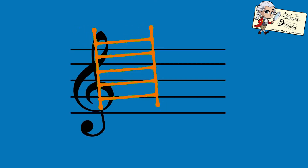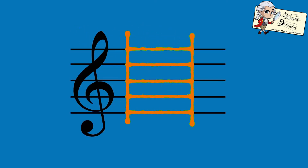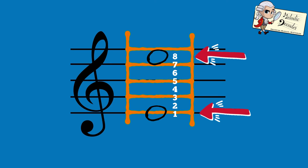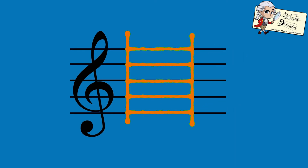Remember our ladder? To work out the interval between two notes, you just need to count each rung and each space of the ladder between the notes. But remember to count the rung or space that each note sits on too. So, this interval is a fifth.